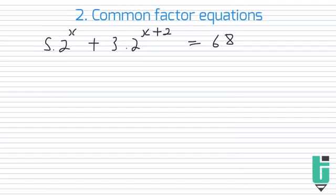So what I want you to notice from this example that we have here, 5·2^x + 3·2^(x+2) = 68. What I want you to notice compared to the previous type of equation, the same base equations that we did, is the fact that we now have a plus over here. So we're going to start working with pluses and minuses.